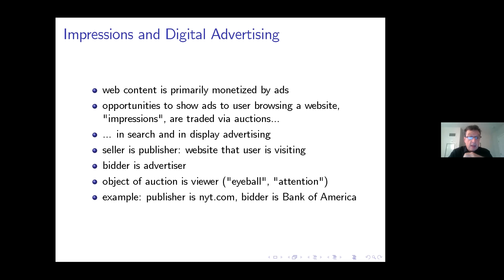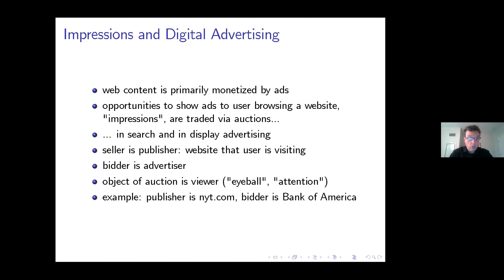As many of you know, web content today is primarily monetized by ads. The opportunities to show ads whenever you are going to look at either a search output or on your favorite website for publications — impressions are traded by auction. That happens both in search and display advertising. The publisher is the seller of the space that the website user is visiting, and the advertisers are bidders for that space. The object of the auction is really the viewer, or the attention or the eyeball of the viewer.